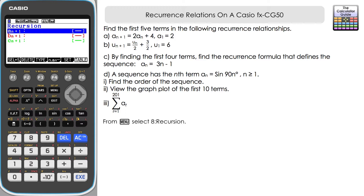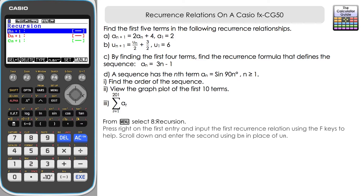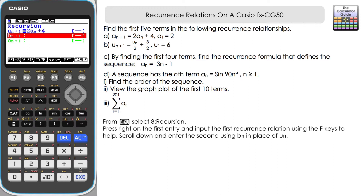Let's start off with A_(n+1). If you press right we can input this in. It's 2 and then A_n which is F2 — so 2A_n + 4 — then press Execute. We've got the recurrence relation entered.